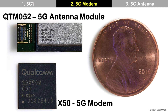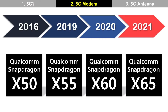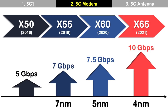Let's talk about the 5G modem first. A modem is a device responsible for communication, also called a baseband processor. Qualcomm has the most advanced 5G technology in the industry, and their X50 is the first 5G modem for smartphones in the world. Over time, Qualcomm upgraded their 5G modem chips from X50, X55, X60, to X65. The later ones have a higher data rate, so you can download data more quickly.